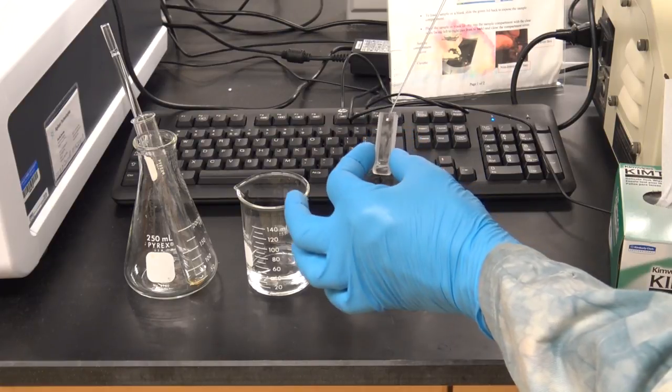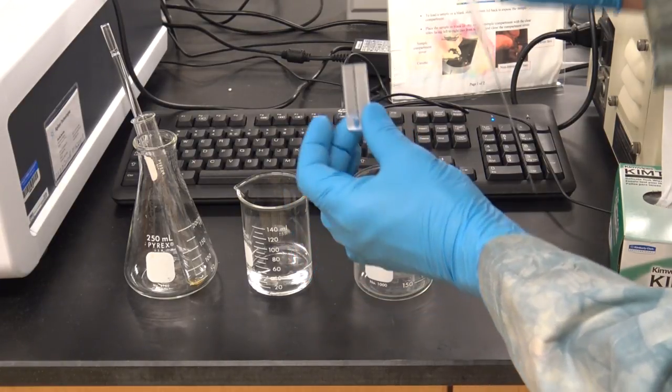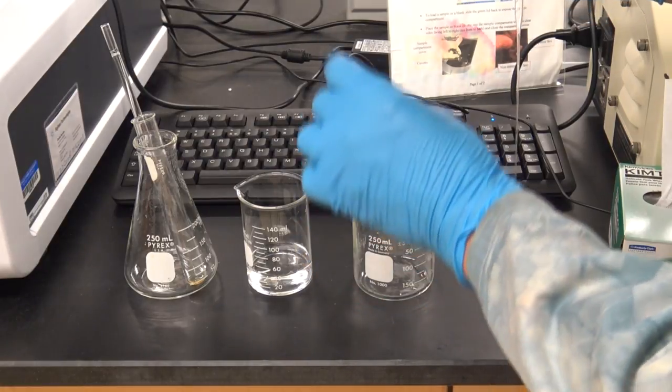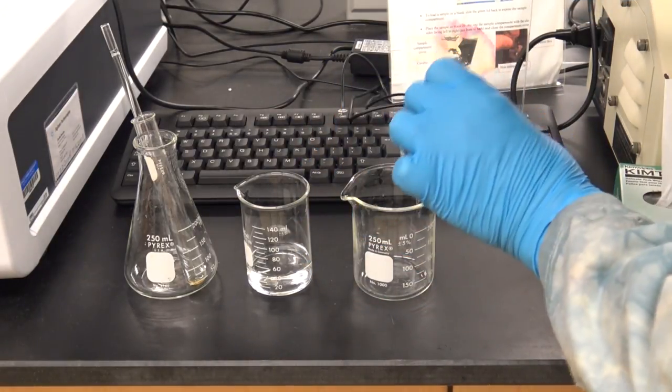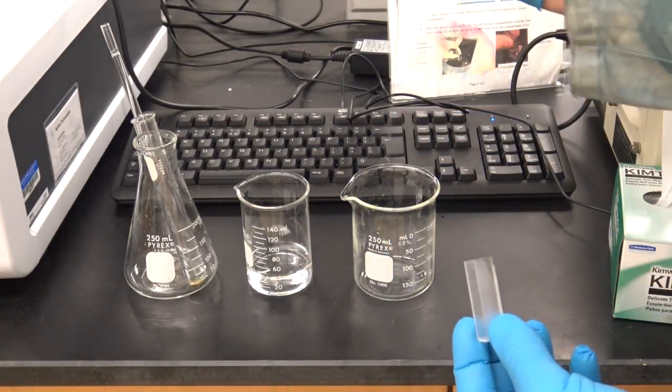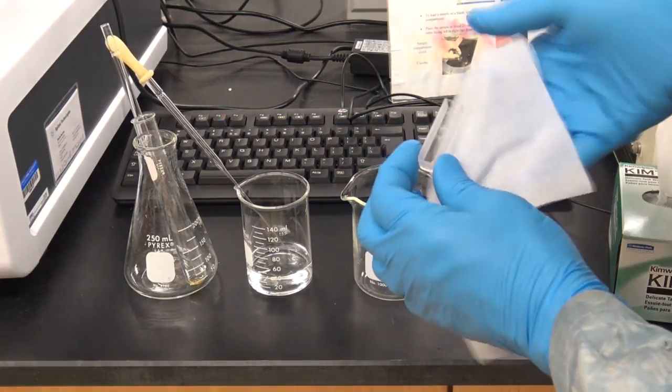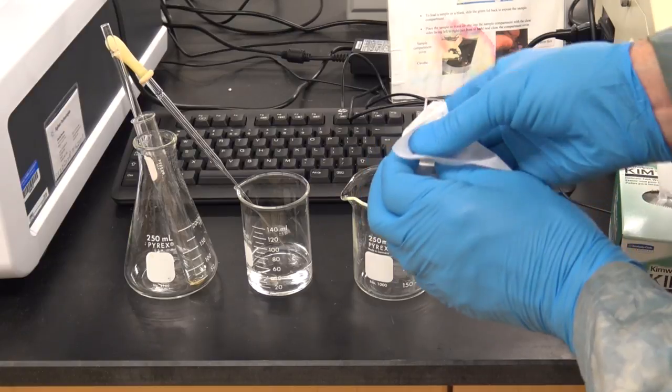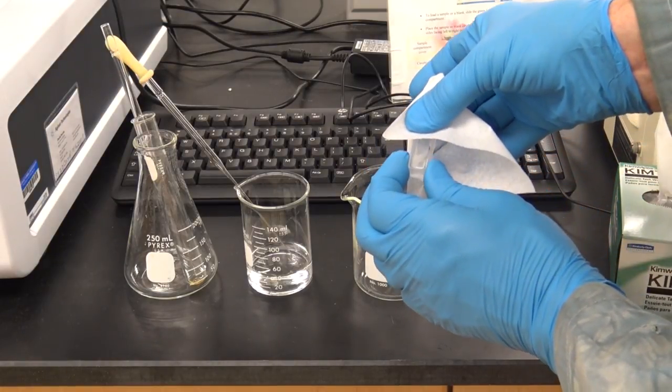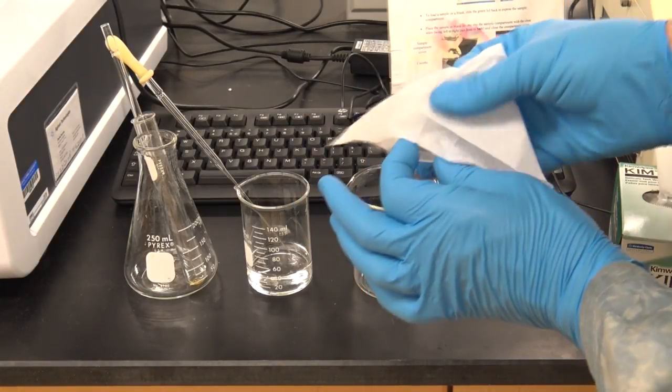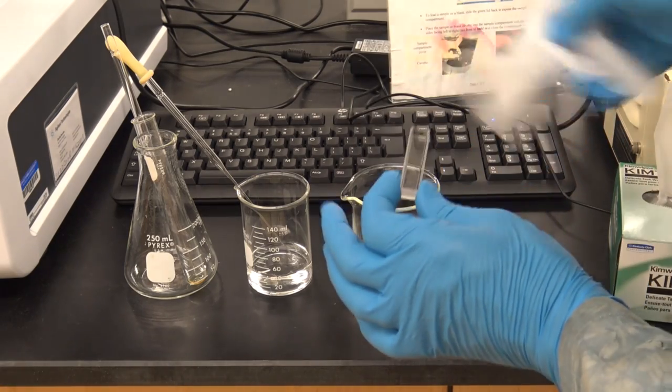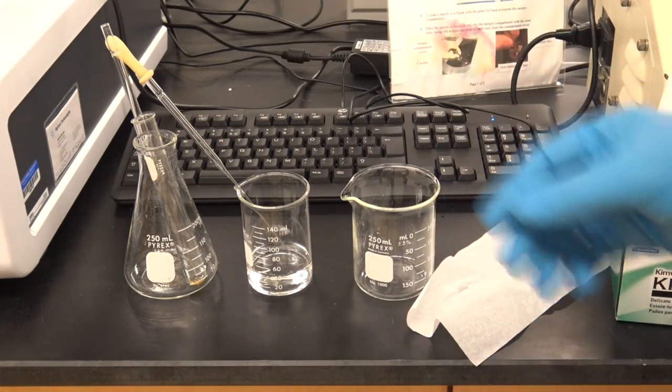We'll begin by rinsing one of the quartz cuvettes using your blank solution. Be careful when you do this because you don't want to scratch the quartz cuvettes, and the glass pipette is able to do this if you press too hard against them. Once you've rinsed it out a bit, take a Kim wipe and wipe the clear sides of the cuvette to be sure that there are no smudges on the outside that could adversely affect your experiment.